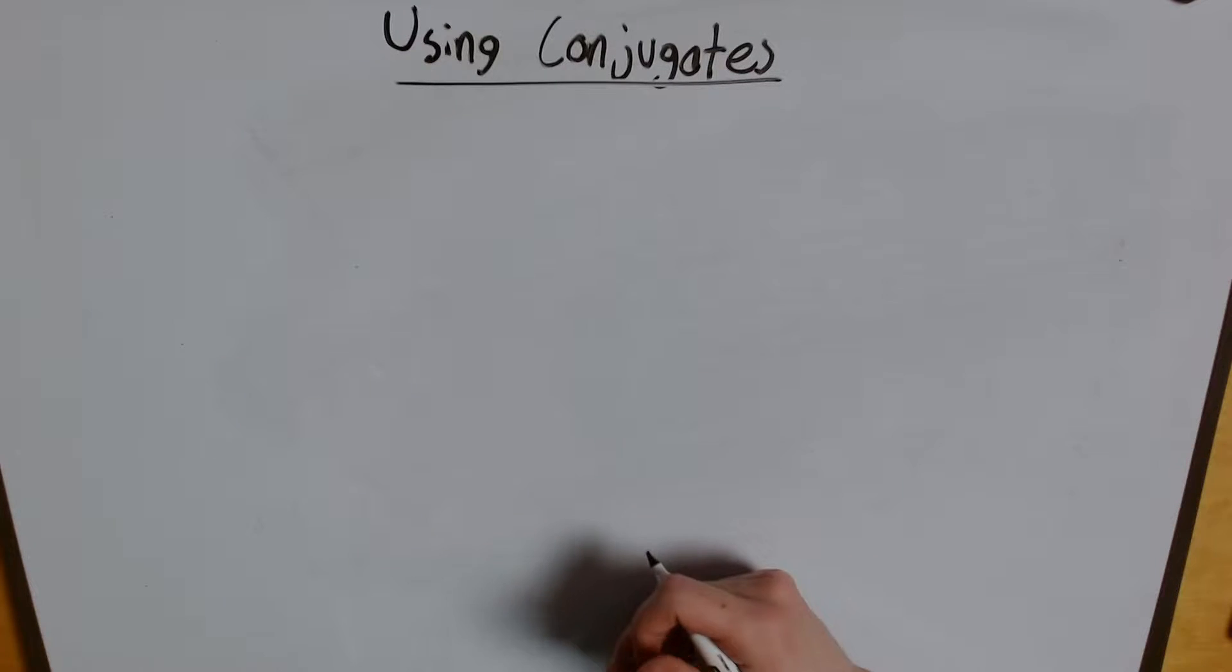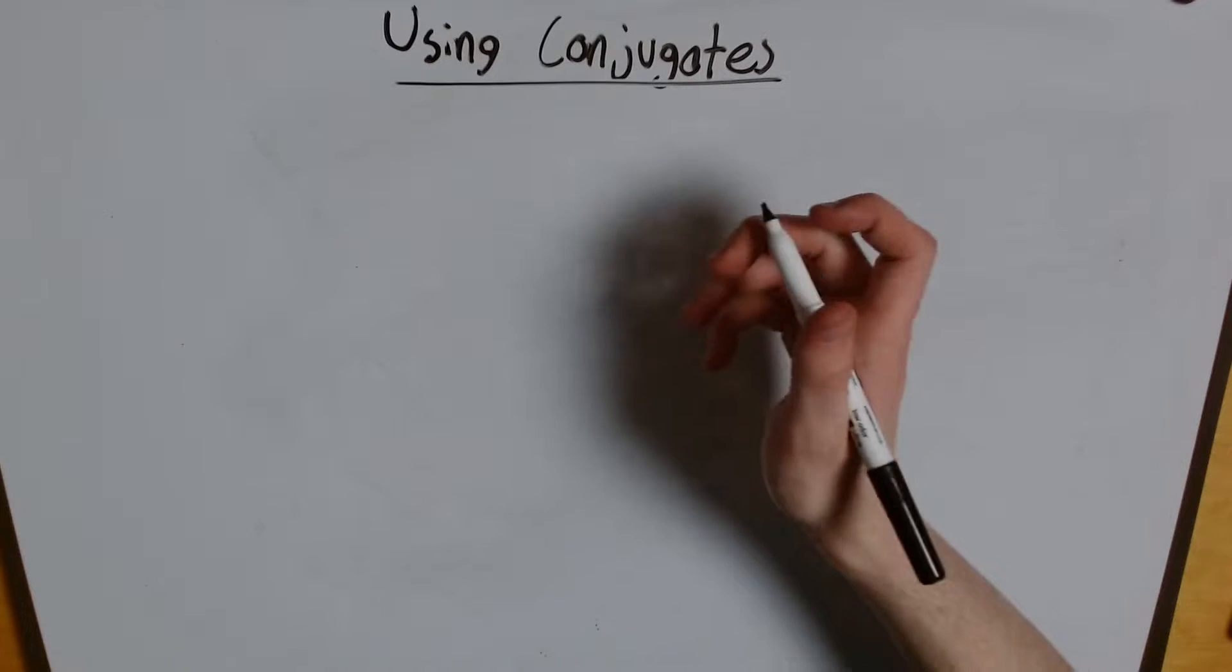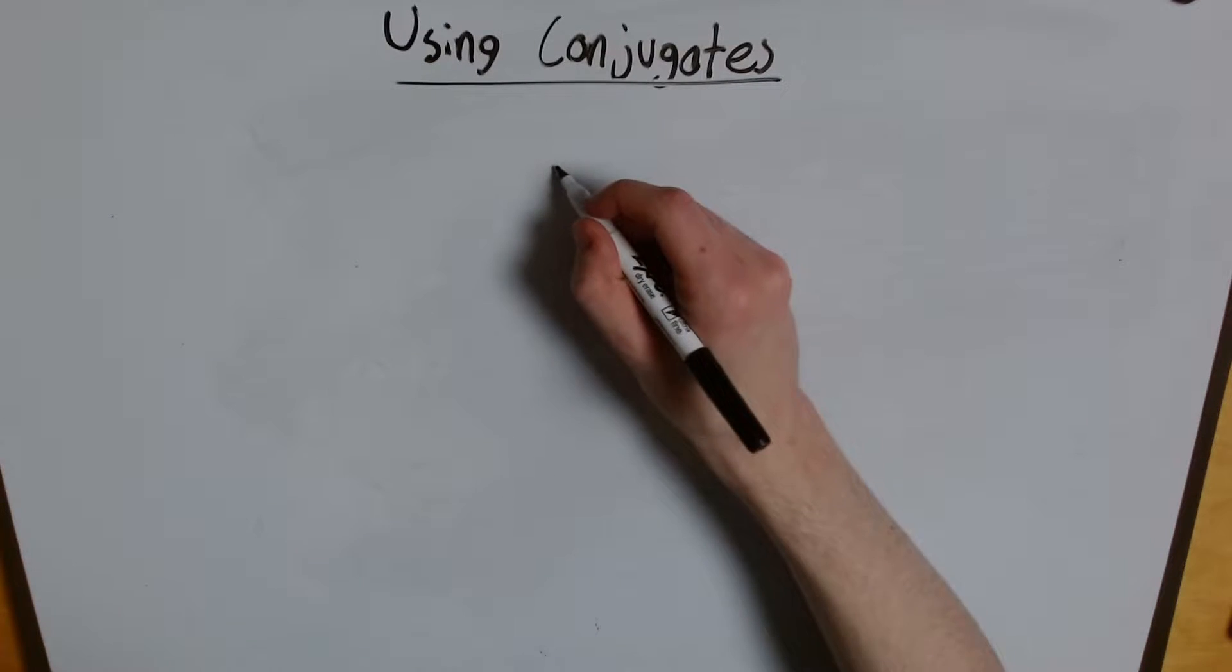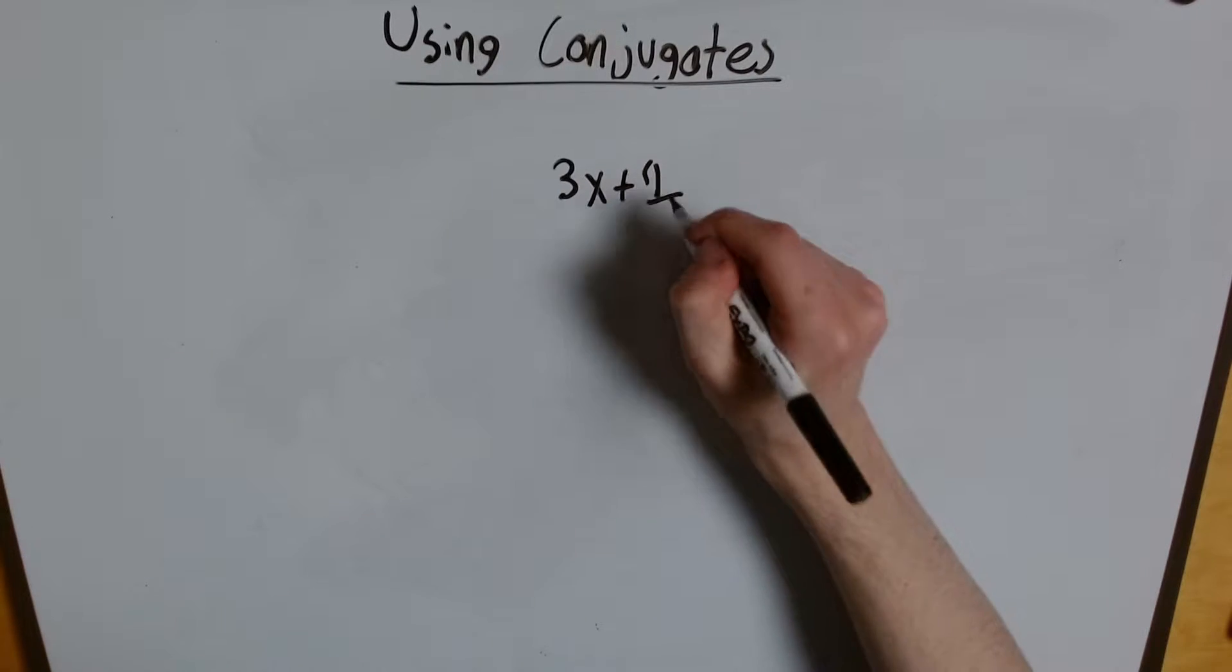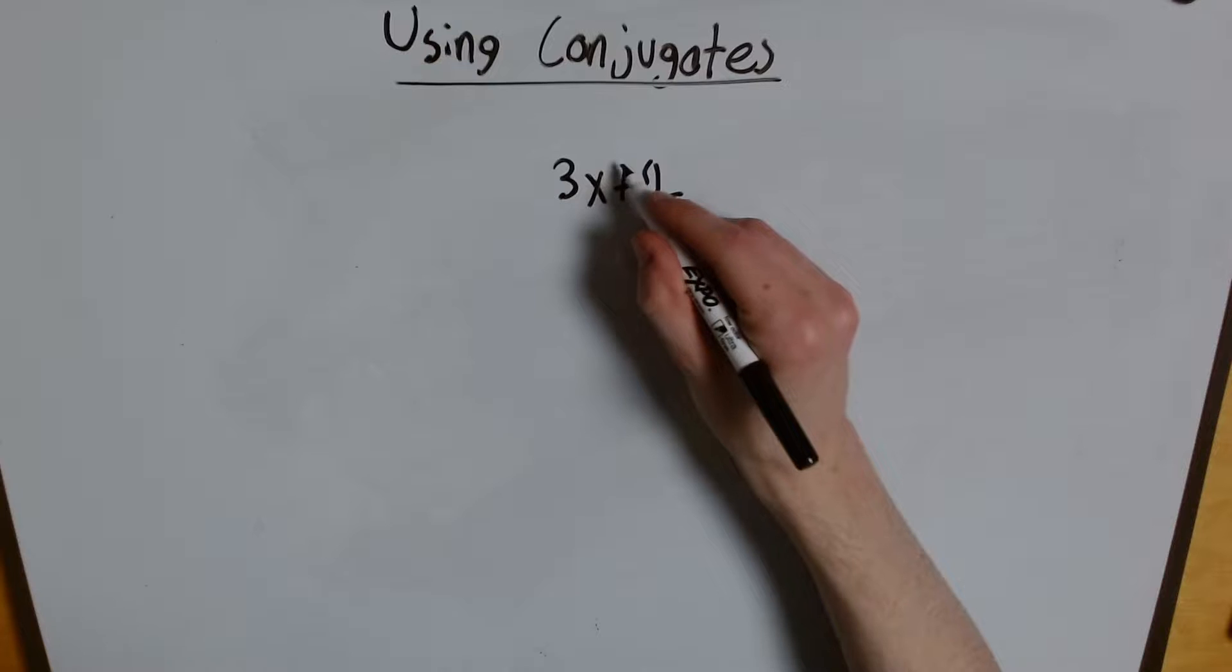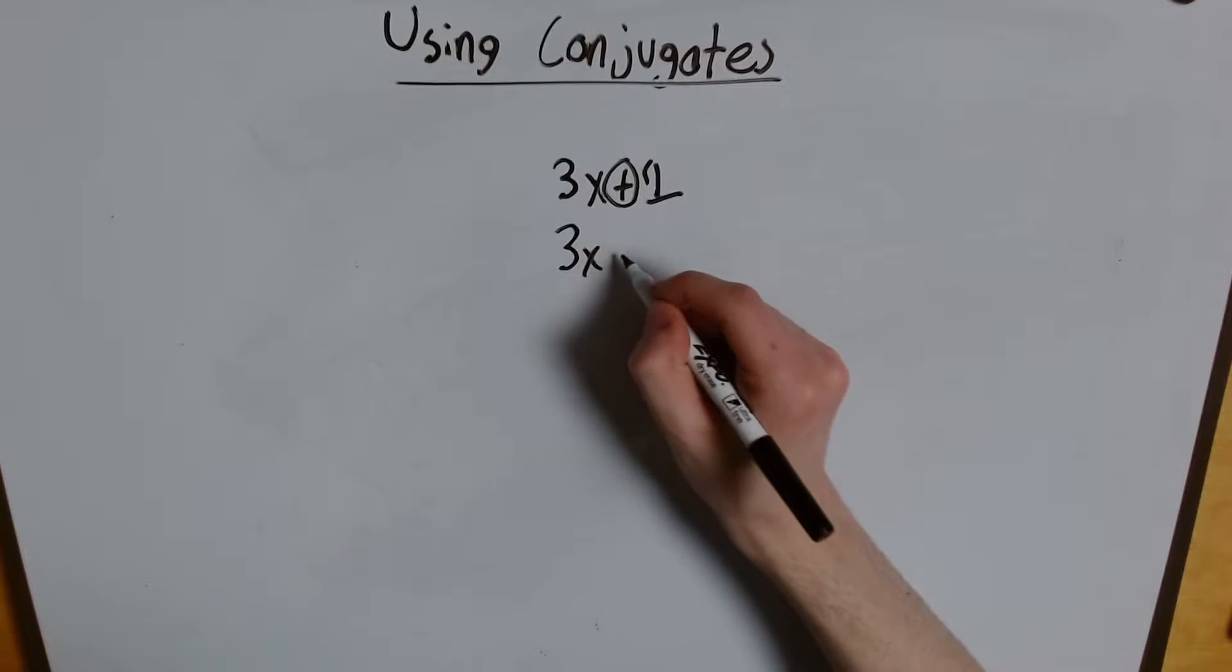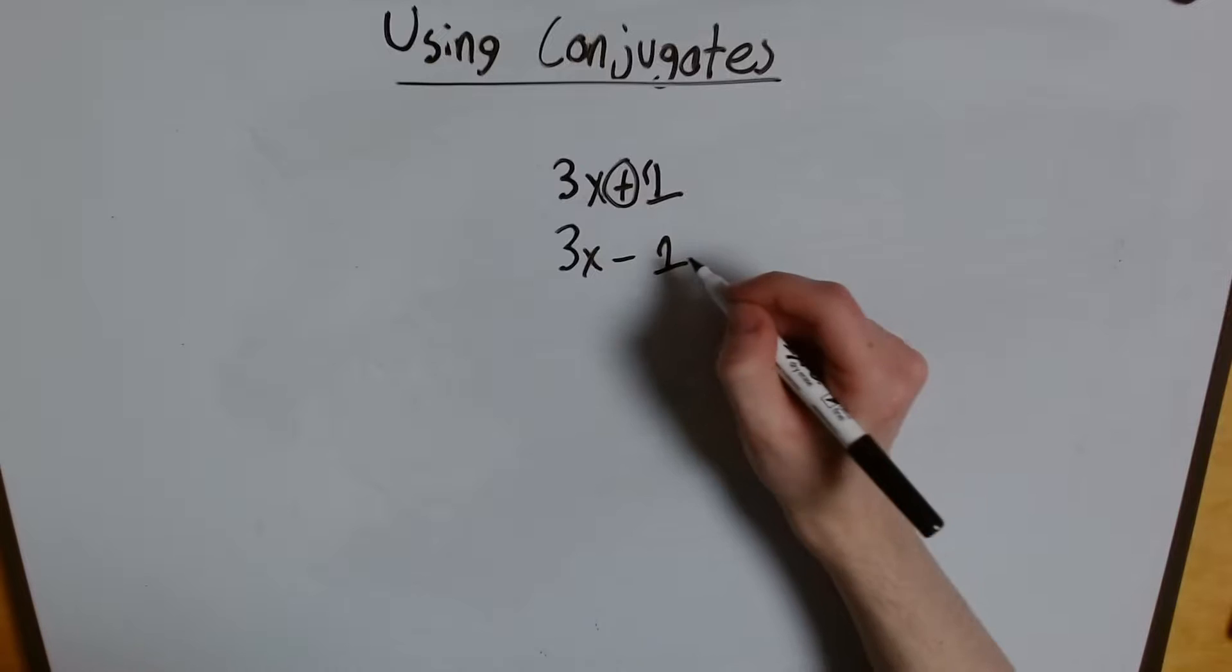So what is a conjugate? Well a conjugate is when we change the sign in the middle of two terms. So if we're dealing with 3x plus 1, the conjugate of 3x plus 1 would be changing this sign here. So it would be 3x minus 1.